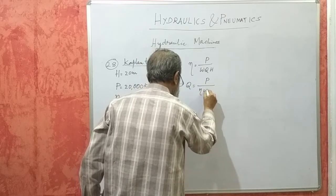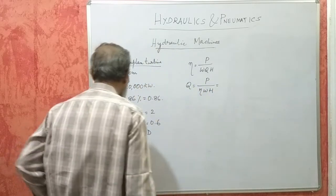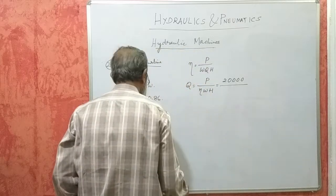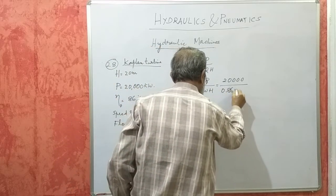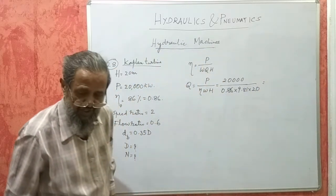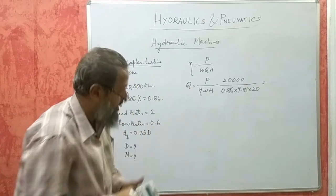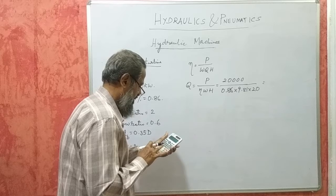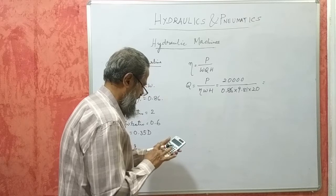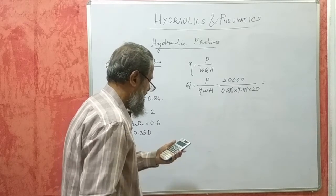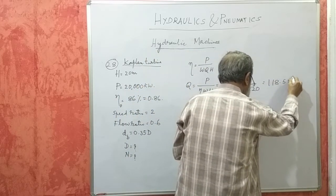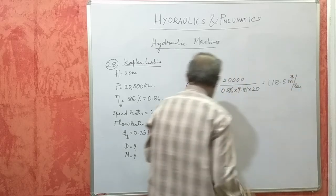Q will be P divided by efficiency into WH. P is given 20,000 divided by efficiency 0.86, W is constant 9.81, H is 20 meters. That will give me 118.5 cubic meters per second. This is the discharge required.